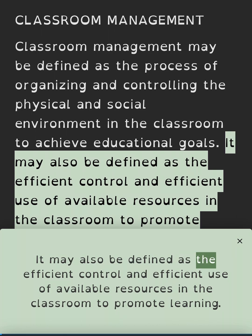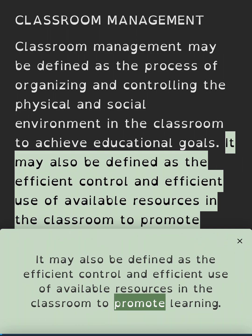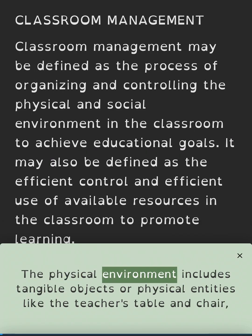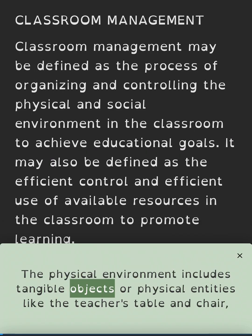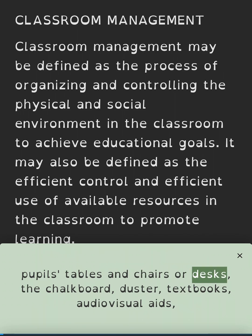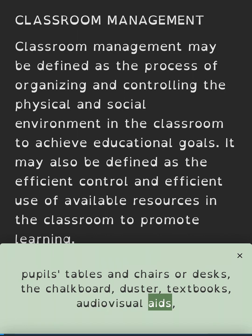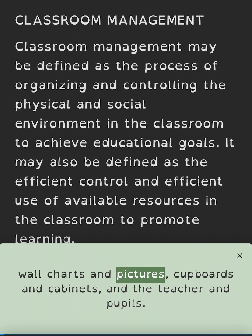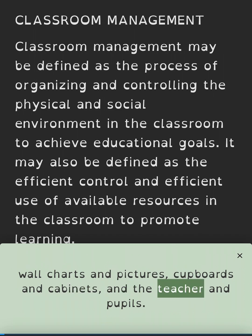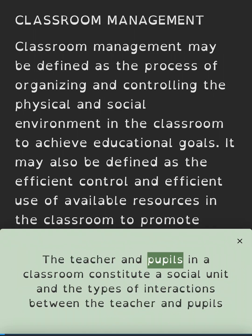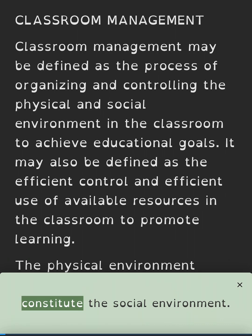It may also be defined as the efficient control and efficient use of available resources in the classroom to promote learning. The physical environment includes tangible objects like the teacher's table and chair, pupils' tables and chairs or desks, the chalkboard, duster, textbooks, audiovisual aids, wall charts and pictures, and cupboards and cabinets. The teacher and pupils in a classroom constitute a social unit, and the types of interactions between the teacher and pupils constitute the social environment.